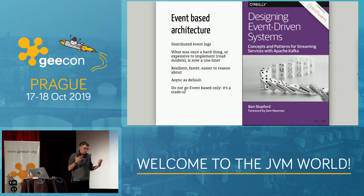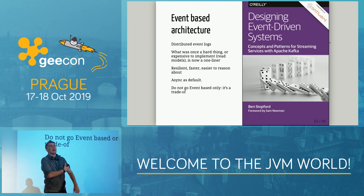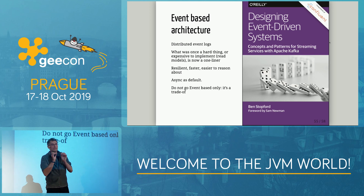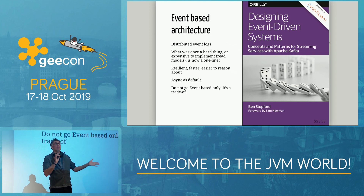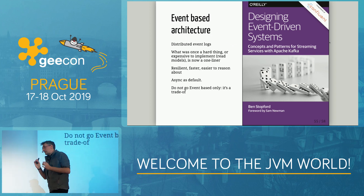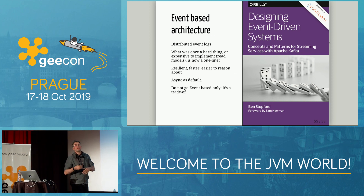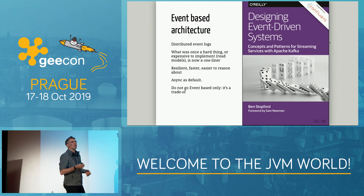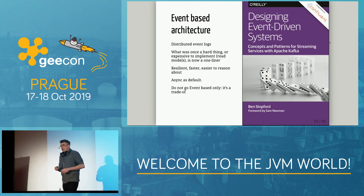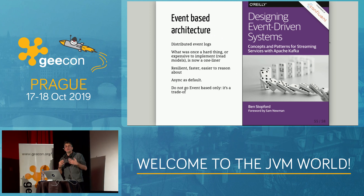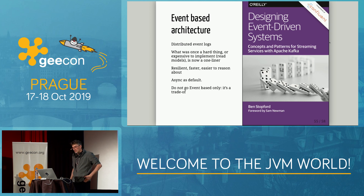To understand all of that, you need to understand event-based architecture. If I could recommend one book about event-driven architecture, it would be this one — it's free to download. It's based on Apache Kafka but describes patterns you can use even with RabbitMQ or anything else, because you're going to need those read models anyway. It will change your perspective on moving to microservices.